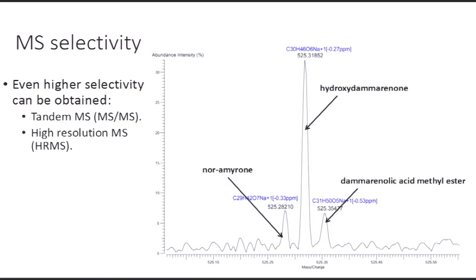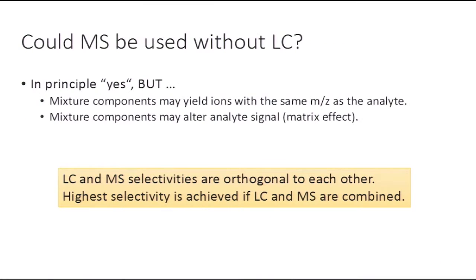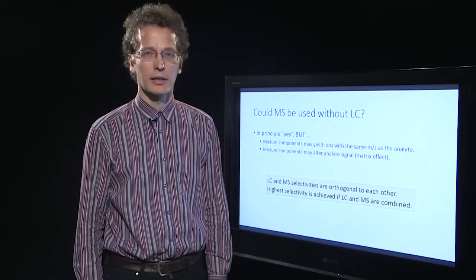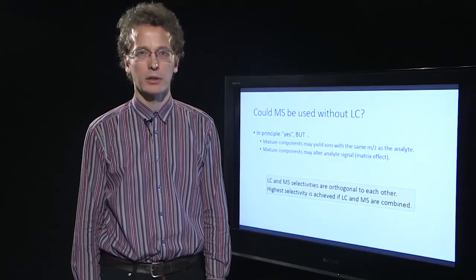Could mass spectrometry be used without liquid chromatographic separation? In principle yes, but there are two possible drawbacks. The mixture components may have the same mass-to-charge ratio as the analyte and therefore cause interference. The other drawback is the possible matrix effect. Therefore, liquid chromatography and mass spectrometry provide complementary selectivity and provide the highest selectivity when used in combination.